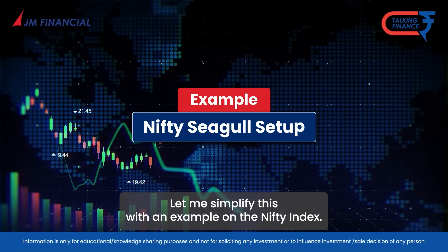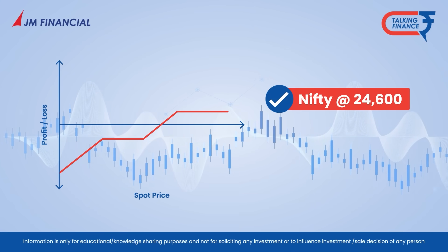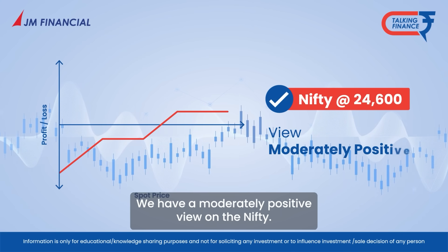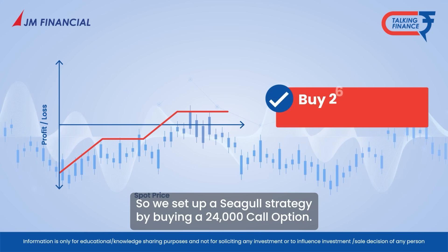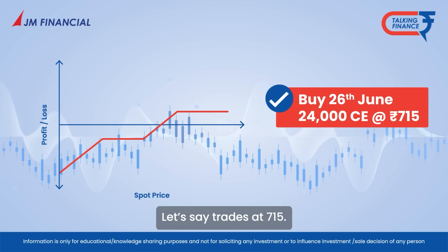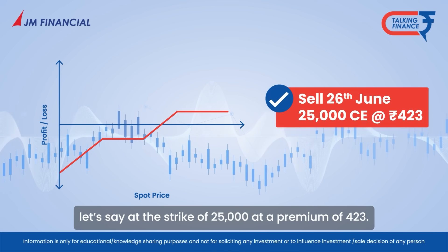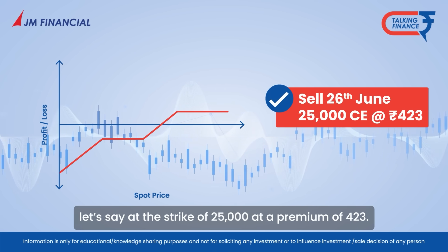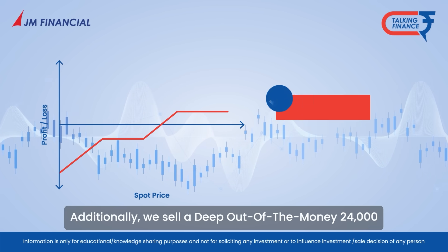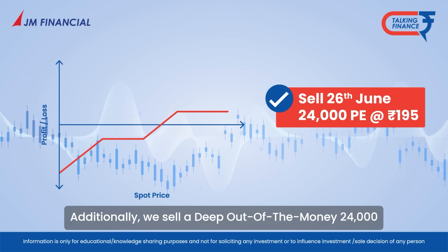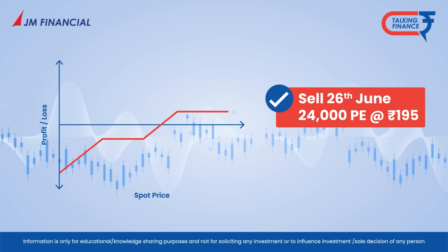Let me simplify this with an example of the Nifty index. Nifty is trading at 24,600. We have a moderately positive view on the Nifty. So, we set up a Seagull strategy by buying a 24,600 call option — let's say it trades at 715. We sell an out-of-the-money call option at the strike of 25,000 at the premium of 423. This sets up our bull call spread. Additionally, we sell a deep out-of-the-money 24,000 put option at the premium of 195.